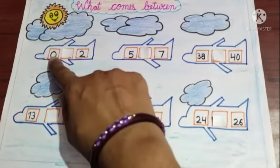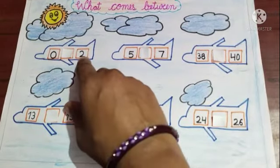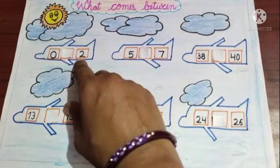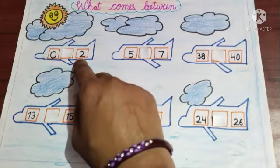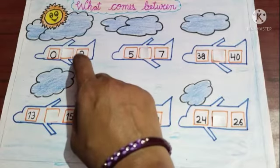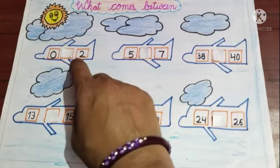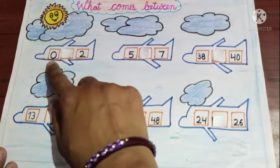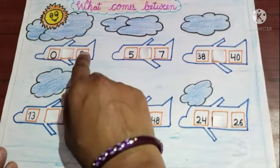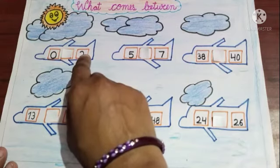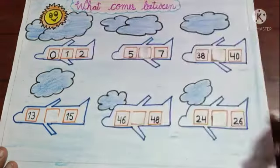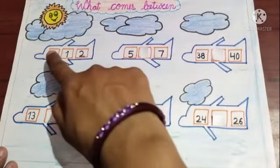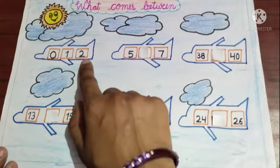The first number is zero and two. So kids, you will read the counting. Zero, one, two. So the answer is one.